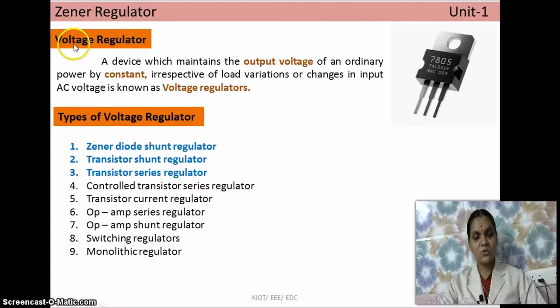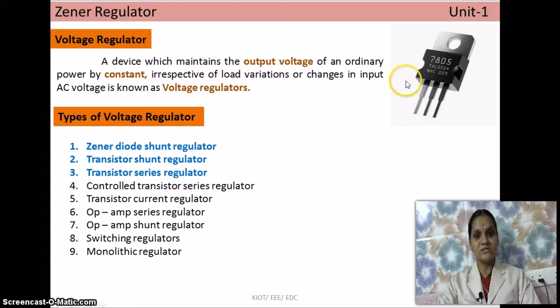First, what is a voltage regulator? From the name itself — a regulator maintains a constant output voltage regardless of changes in the input and changes on the load side. A device that maintains a constant voltage at the output is called a voltage regulator. These voltage regulators have three leads: one for input, one for output, and one for the common side.